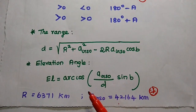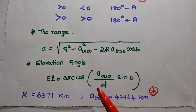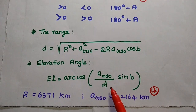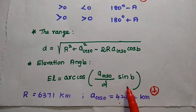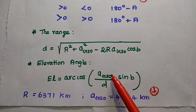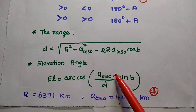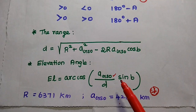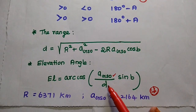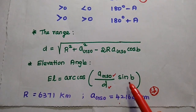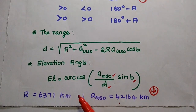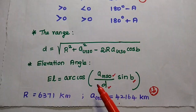The last formula is for the elevation angle. The formula is arccos of (A_GSO / D × sin b). We use the mean radius of the geosynchronous orbit, the range D, and small b to find the elevation angle.